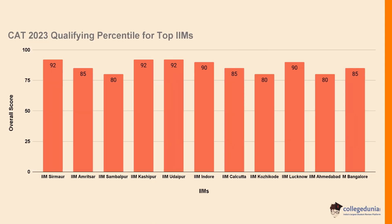Let's check the CAT 2023 qualifying percentile for top IIMs. For IIM Sirmore, the qualifying percentile score is 92. For IIM Amritsar, it is 85. For IIM Sambalpur, it is 80. For IIM Kashipur, it is 92. For IIM Udaipur, it is 92. For IIM Indore, it is 90. For IIM Kolkata, the qualifying percentile score is 85.